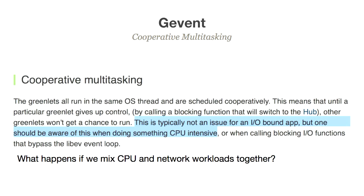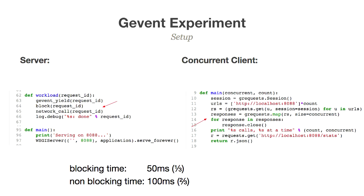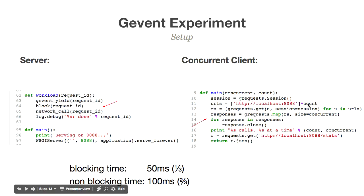I set up a little IPython notebook to figure out what's going on. We have a client using GEvent via the grequests library to do concurrent requests to a server, specifying how many we want at a time. On the server side, we have a yield operation, a blocking CPU call simulated by a plain sleep, and a network call simulated by a GEvent sleep. Overall this should take 150 milliseconds — 50ms blocking and 100ms non-blocking.